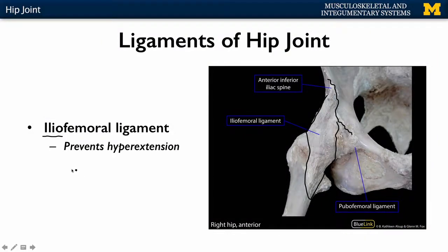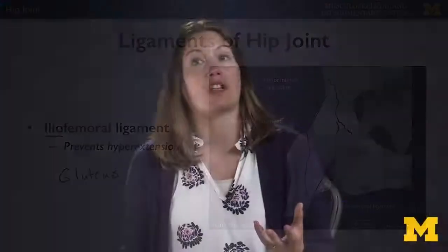Not only the gluteus maximus, which is the largest, but the gluteus medius and the gluteus minimus, as well as the lateral rotators of the hip, which are deep to all the gluteal muscles — deep and inferior. These play an important role in stabilizing the joint and allowing us to locomote in an efficient way.